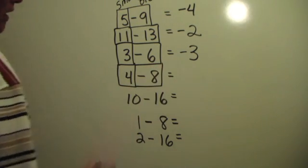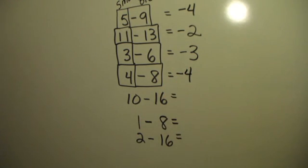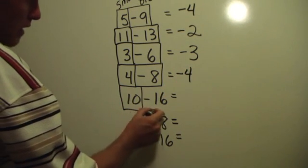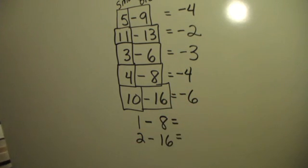The same thing with four minus eight. A small number minus a larger number, negative four. Ten and negative sixteen. Ten minus sixteen is negative six.